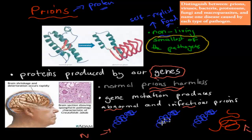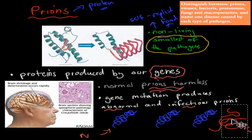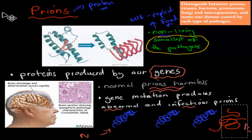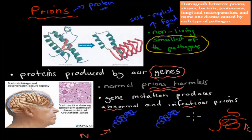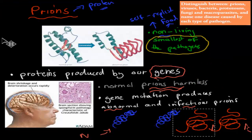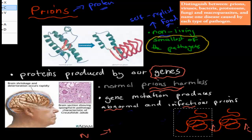Prions are usually in our brain. If an abnormal prion — which has turned abnormal because our genes are malfunctioning — gets close to a normal one, what will actually happen is the normal one will change its shape to become abnormal as well. That's why they're called infectious: they will turn the other ones into abnormal ones. And because they're in the brain, if they become abnormal, you're going to have one after another turning abnormal. Eventually they're all going to be abnormal and they can actually make our brain become damaged.